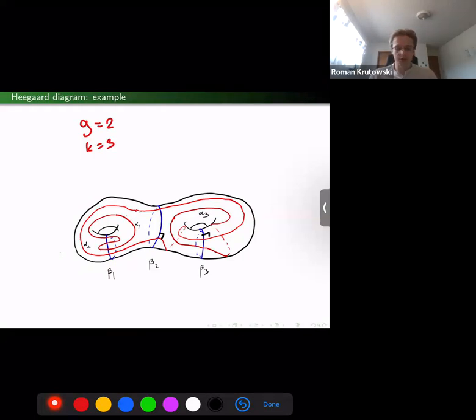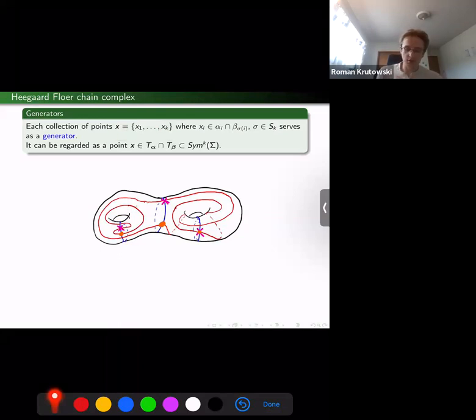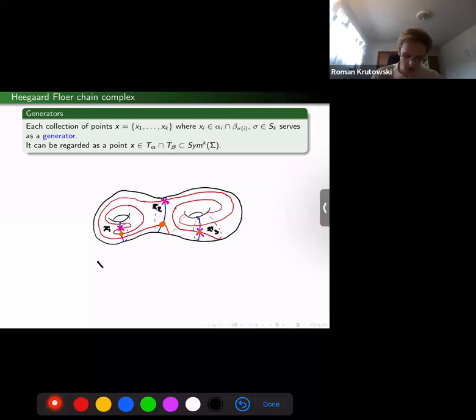Now, how does one define a Heegaard Floer chain complex? The generators in the Heegaard Floer chain complex are collections of points of intersections between alpha and beta curves, such that each alpha curve and each beta curve appears only once. For instance, these pink crosses we can denote x1, x2, and x3—they form such a generator.